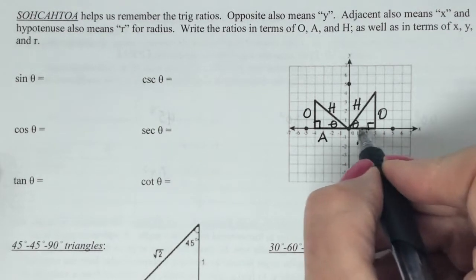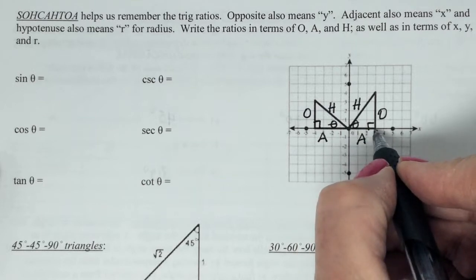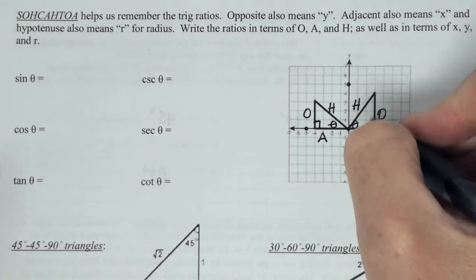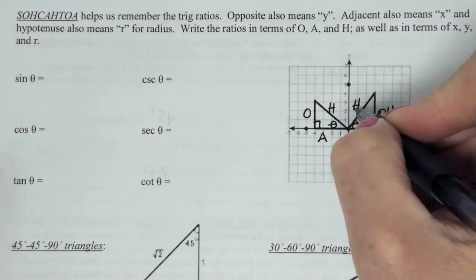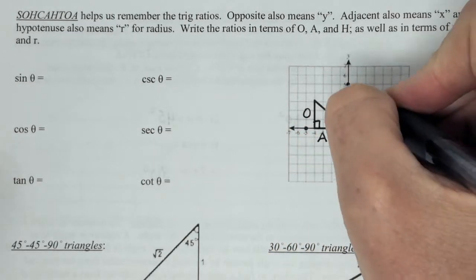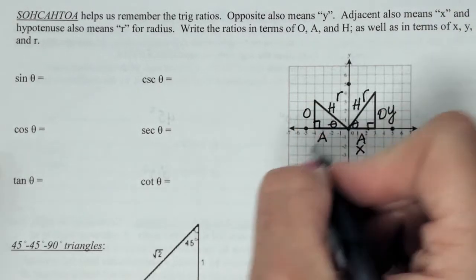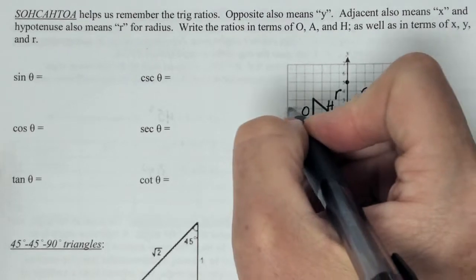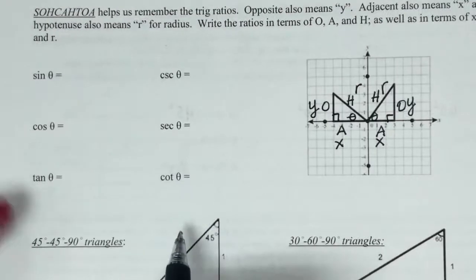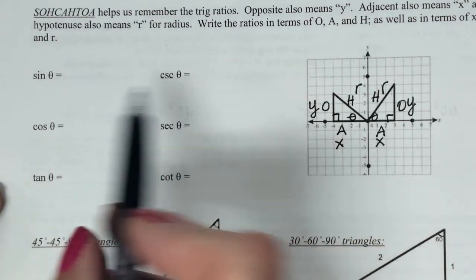So looking at this triangle, then, what is this point right here? Is this an x value or a y value, that 3? X. So this is going to be an x value. And then this is going to be what? Y value. And then the hypotenuse, if I were to create a circle, that hypotenuse would be the same thing as the radius. So the hypotenuse is always the radius. The adjacent is always the x. The opposite is always the y. And that's where trig all starts. So you're just supposed to go down through here and write these in terms of O, A, and H, and also in terms of x, y, and r. So we'll just do one of these.